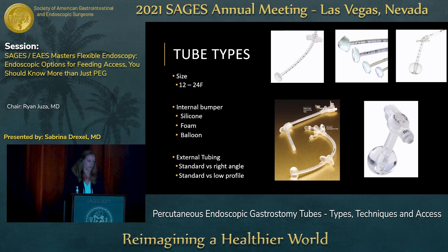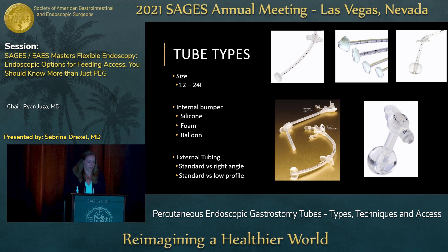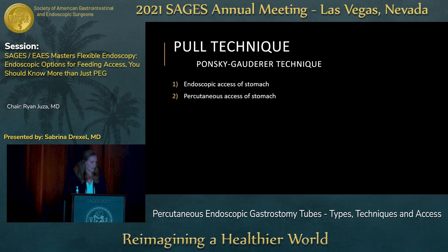There are different types of internal bumpers. The most common one, at least in the United States, is a silicone-based bumper, but there are also foam bumpers and balloon bumpers to keep the tube in place. The external tubing can also vary — you can have a standard straight tubing on the outside versus a right-angle tube. You can also have a standard length versus a low-profile or button-type tube.